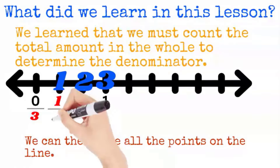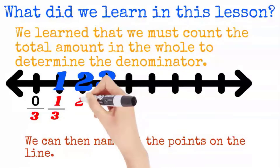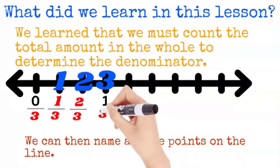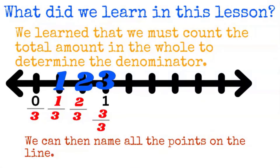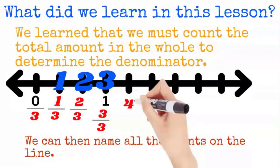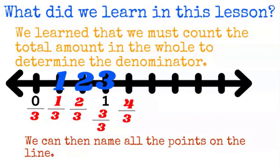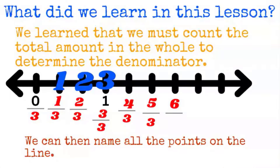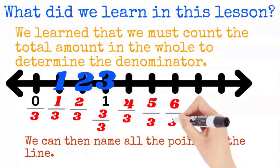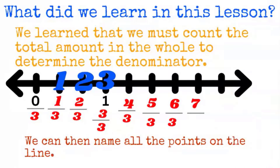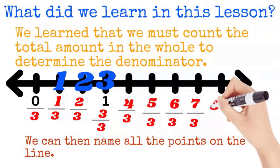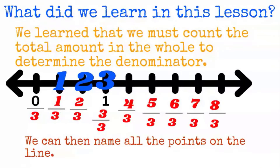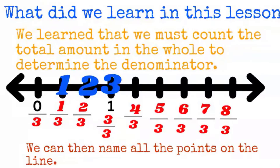So this one is zero thirds, one third, two thirds, three thirds — and I'm sure you're seeing the pattern now. Three thirds, four thirds. We keep going: five thirds, six thirds, seven thirds, eight thirds — and that's it. I hope you learned a lot in this lesson about fractions on the number line. I'll see you in the next video.